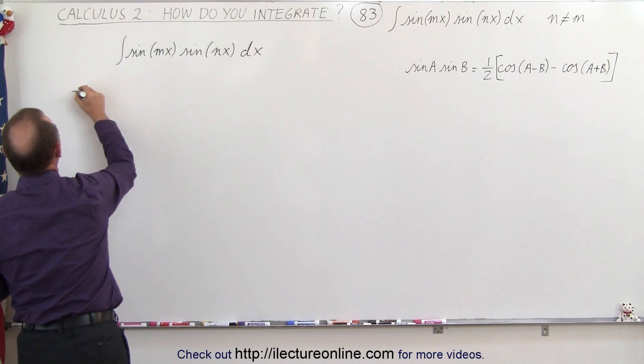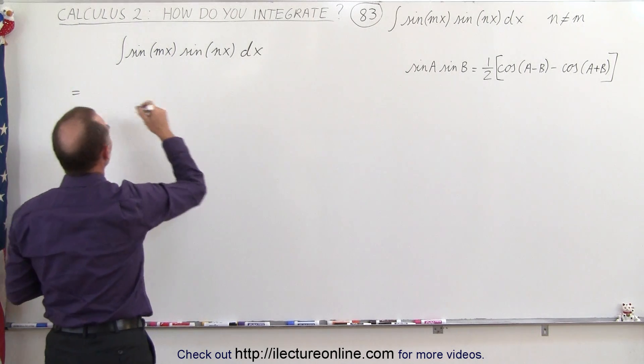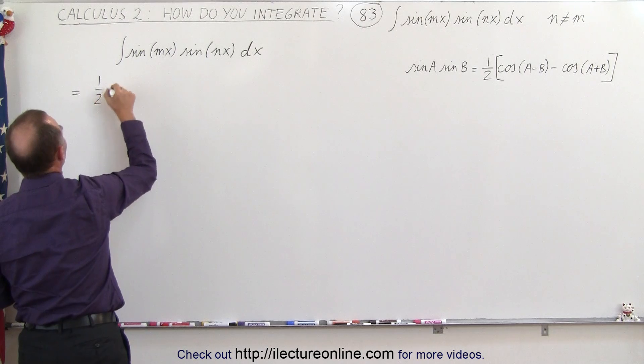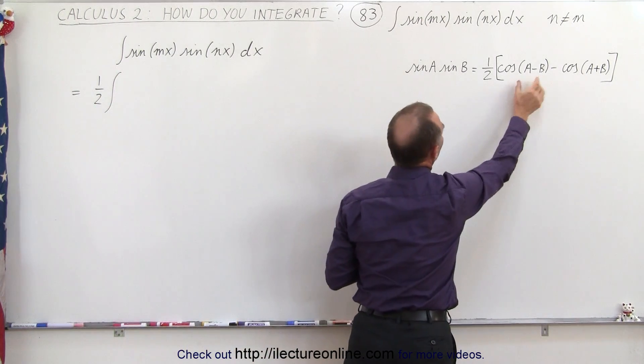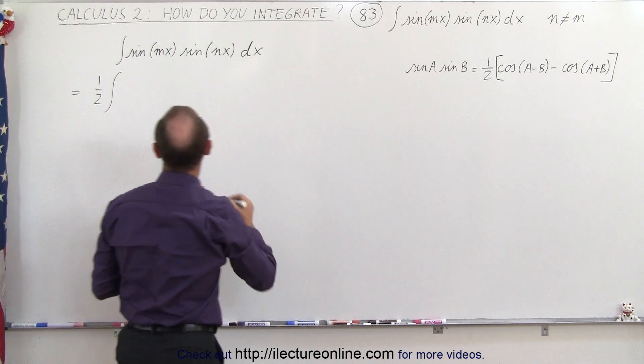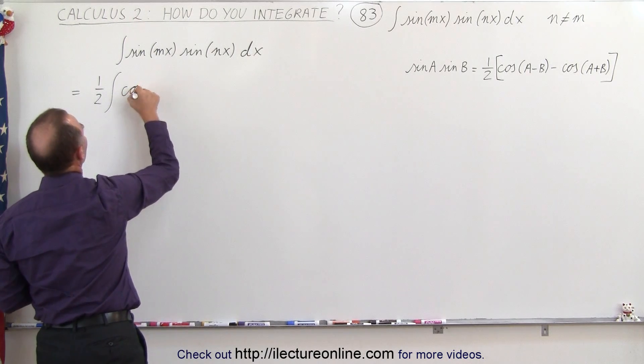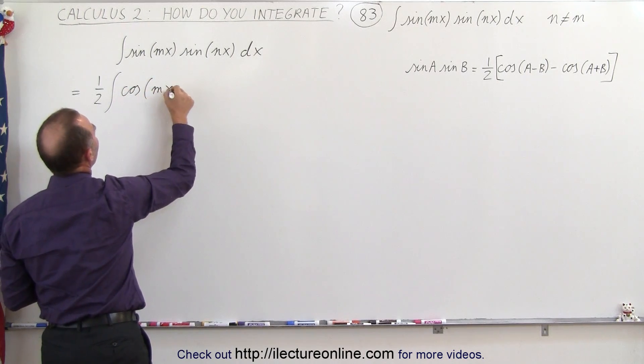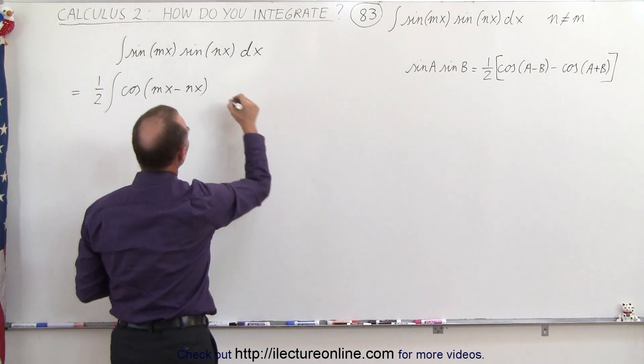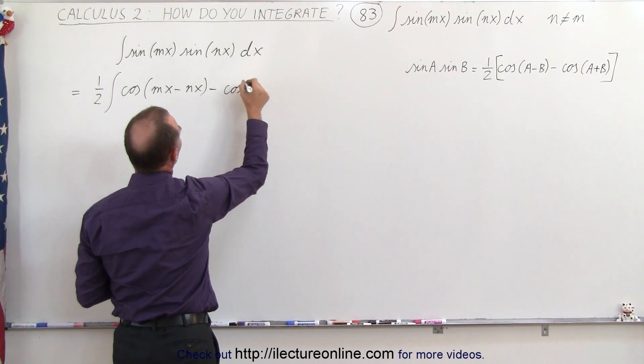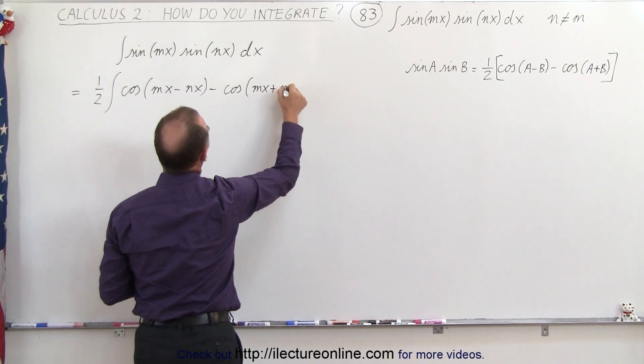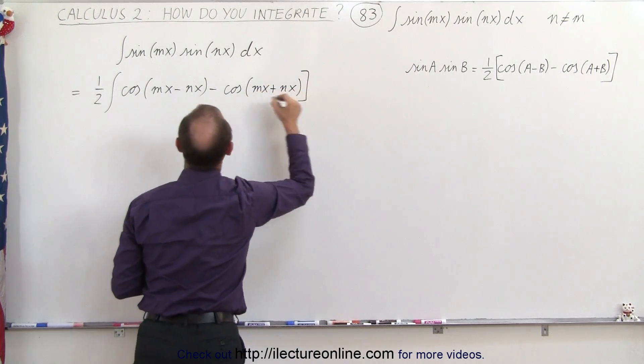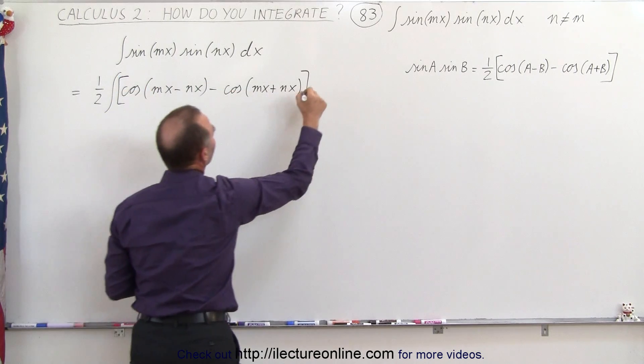So this is equal to, and notice we can take the one-half outside the integral sign, so it's one-half times the integral of, now we have the cosine of the difference of the two angles, so we take cosine of mx minus nx, and then minus the cosine of the sum of the two, which is mx plus nx, and if we put brackets around it, then we can also write the dx.